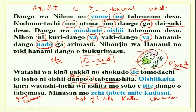Soshite dango wo tabemasu — you join two sentences by te form, which is what we did last time: joining two or three sentences and making one using te form of the verb. Minasan mo zehi tabete mite kudasai — zehi means must, so please eat and see. I hope the passage is now understood. Whatever is left we will try to complete in our next lesson.